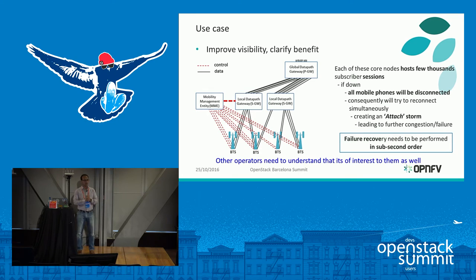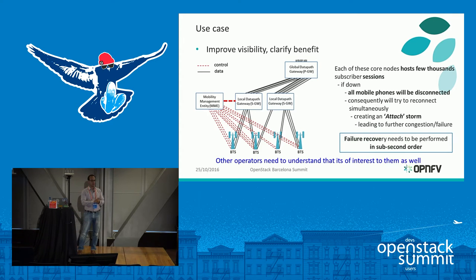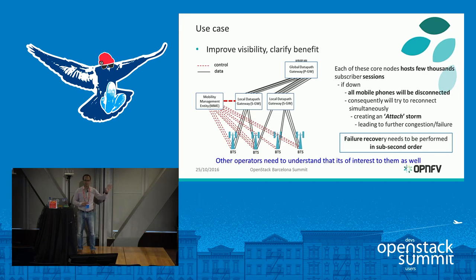I come from a mobile operator, so I'll bring a requirement that is useful to mobile operators. This is a 4G mobile core network. Each of these nodes — the rectangles you see — basically host a few hundred thousand mobile phone sessions. As soon as you show this figure to someone from a mobile operator and explain the problem, they instantly understand the severity of the problem.